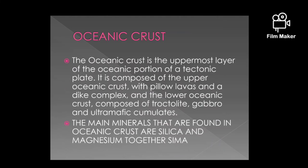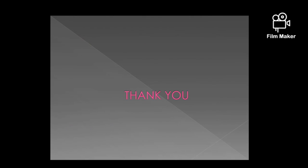Oceanic crust. The oceanic crust is the uppermost layer of the oceanic portion of a tectonic plate. It is composed of the upper oceanic crust with pillow lavas and a dyke complex, and the lower oceanic crust composed of troctolite, gabbro, and ultramafic cumulates. The main minerals found in oceanic crust are silica and magnesium — together known as Sima. Thank you.